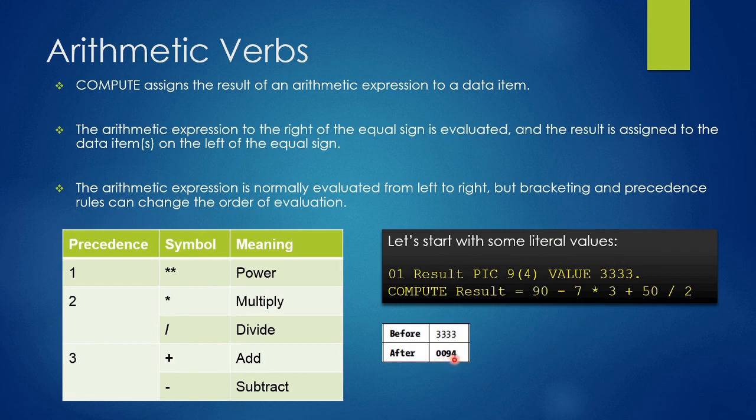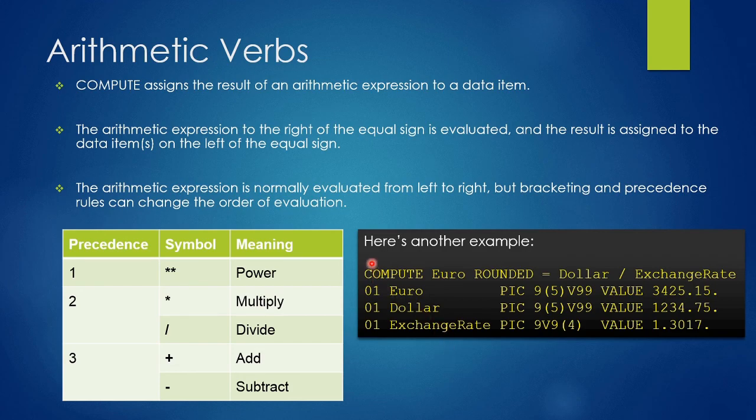Now let's understand with one more example. In this example we are using ROUNDED phrase. The value of the division of dollar and exchange rate will go to euro variable.